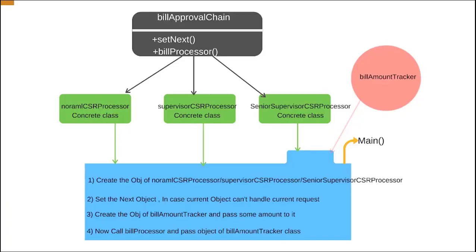First we will understand the program in the form of a diagram and then jump into the actual code. I am implementing a bill approval system where each CSR has a specific approval limit: normal CSR approves bills up to $10, supervisor CSR up to $100, and senior supervisor CSR handles amounts more than $100.